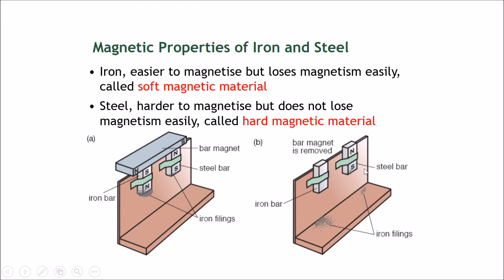Comparing with the steel bar — even after the bar magnet has been removed, the steel bar still has iron filings attached to the bottom. This means the steel bar actually retains its magnetism. So even though the steel bar is a weaker magnet, it will remain a magnet even when the bar magnet is taken off. Therefore, without the influence of a bar magnet, the steel bar is essentially the better choice because it retains its magnetism, but the iron bar does not.